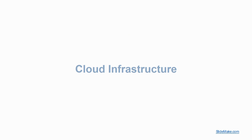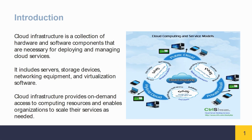Cloud Infrastructure. Introduction. Cloud Infrastructure is a collection of hardware and software components that are necessary for deploying and managing cloud services. It includes servers, storage devices, networking equipment, and virtualization software. Cloud Infrastructure provides on-demand access to computing resources and enables organizations to scale their services as needed.